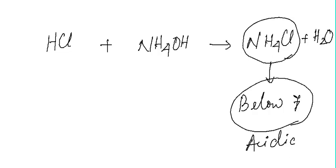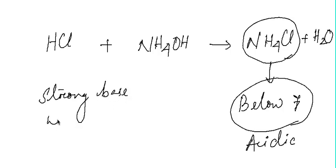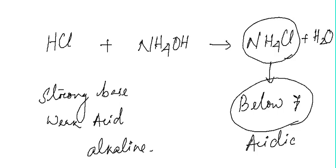Similarly, if a salt is produced from a strong base and a weak acid, the resulting solution will be alkaline. To summarize: salts of strong acid and strong base give pH 7 (neutral); strong base and weak acid give pH above 7 (alkaline); and strong acid and weak base give pH below 7 (acidic).